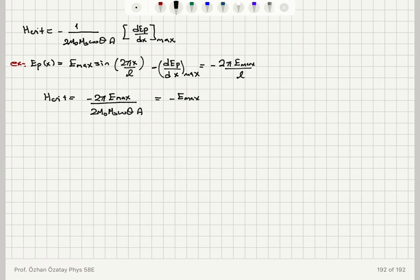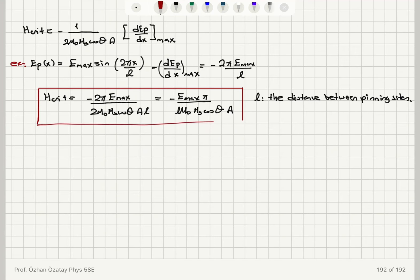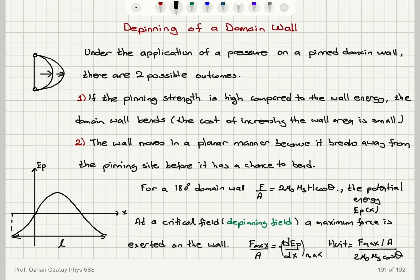This simplifies to eMax·π over (L·μ₀·Ms·cosθ·A), where L is the distance between pinning sites. In magnitude, this gives us the critical pinning field acting on the domain wall to break away from the pinning sites.